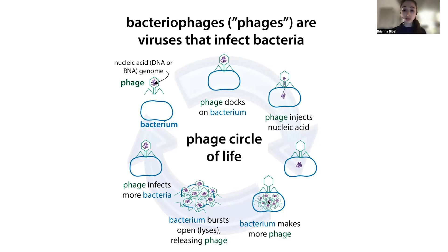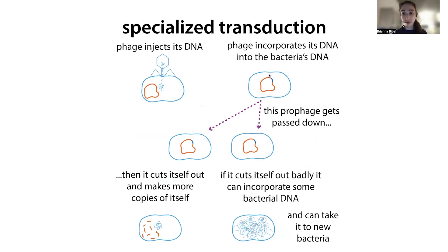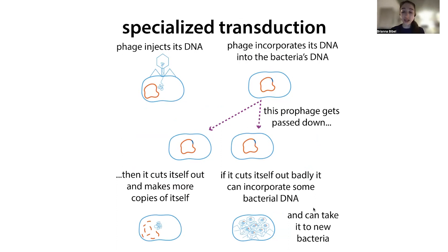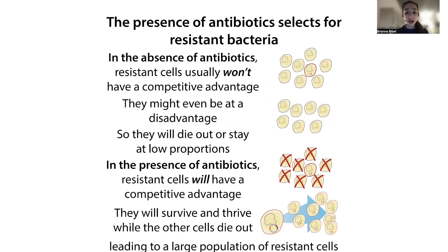When conditions are right, the phage — now called a prophage while integrated — turns lytic again and has to cut itself out of the bacterial genome. If it doesn't cut precisely, it can incorporate bits of the bacterial genome on either side of its own sequence. That bacterial DNA gets packaged with the phage genome, carried to other bacteria, and has a chance of being integrated into that new bacterial genome. This is how bacteria can acquire new genes in a single step.